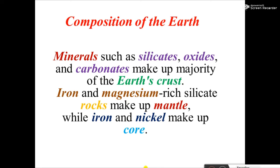The crust is composed of silica, oxide, and carbonate. The mantle is composed of iron and magnesium-rich silica rocks or minerals. The core, or center part, is rich in iron and nickel. Simply, you should know the composition of each component: crust — silica, oxide, carbonate; mantle — iron and magnesium-rich silica; core — iron and nickel.